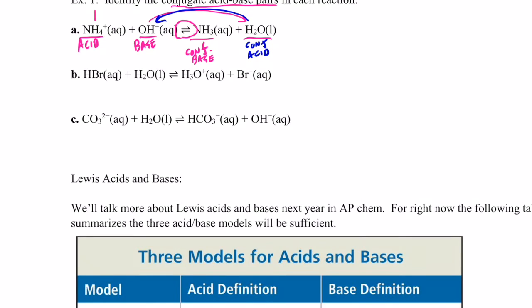Welcome back. Let's see how you did on letter B. HBr became Br negative — a proton was donated, so this was the acid. H2O became H3O plus — it accepted a proton, so that's the base. Going in the other direction, H3O plus became H2O — it donated a proton, so this is the conjugate acid. And Br negative became HBr — it accepted a proton, so that's the conjugate base.